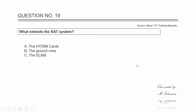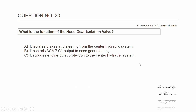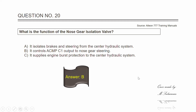Question nineteen: what extends the RAT system? The answer is C — the ELMS. Question twenty: what is the function of the nose gear isolation valve? The answer is B — it controls the center system pump C1 output to nose gear steering.